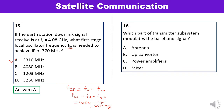Question 16: Which part of the transmitter subsystem modulates the baseband signal? Options are antenna, upconverter, power amplifiers, and mixers. The upconverter translates the baseband signals modulated onto a carrier up to the final uplink microwave frequencies — answer B is correct.